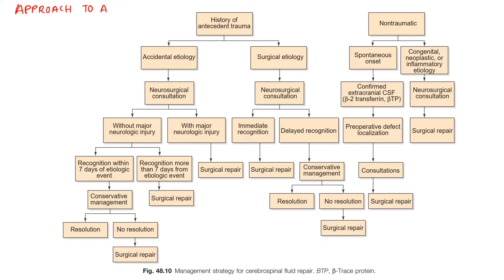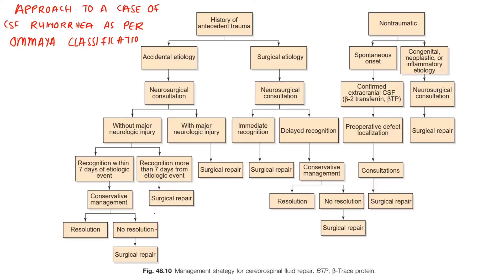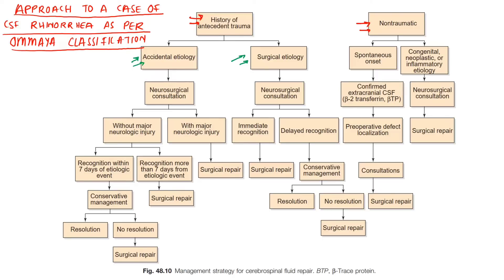Now coming to the approach to a case of CSF rhinorrhea. As per the Omaya classification, CSF rhinorrhea can be of two types: traumatic, with a history of antecedent trauma, and non-traumatic. The traumatic one is of accidental etiology or may be iatrogenic, that is, surgical etiology.